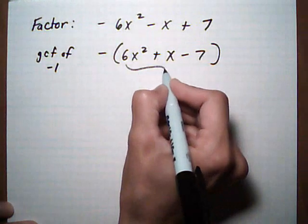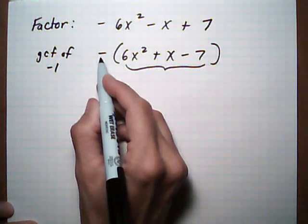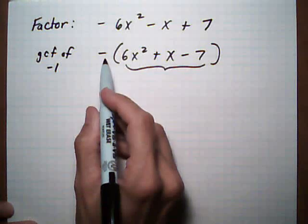And then what we'll do is just factor this trinomial, and this minus sign on the outside, we'll just tag it on at the end and multiply it to the result. So let's forget about it for now.